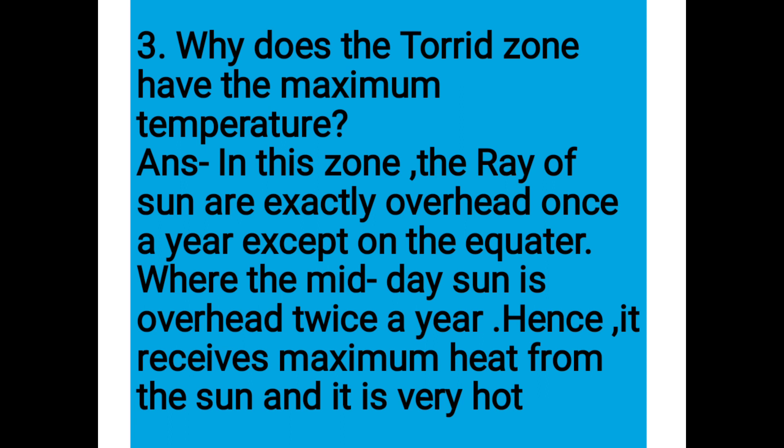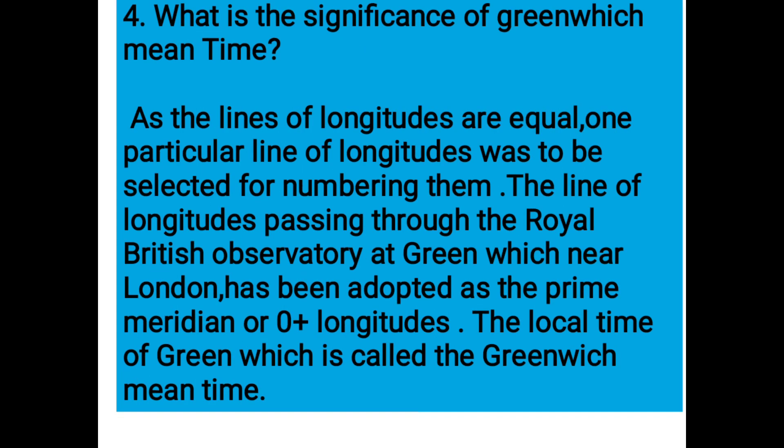Why does the Torrid Zone have the maximum temperature? In this zone, the rays of the Sun are exactly overhead once a year, except on the equator where the midday Sun is overhead twice a year. Hence it receives maximum heat from the Sun and is very hot.